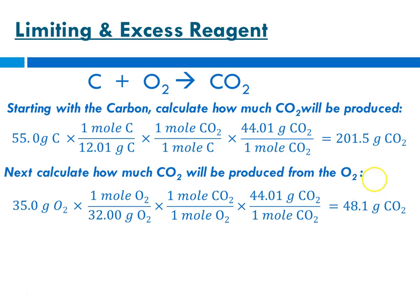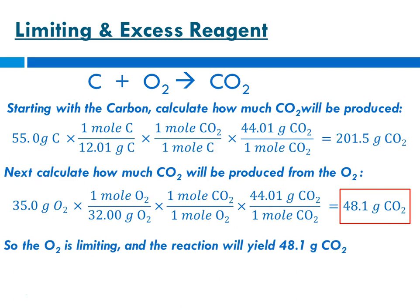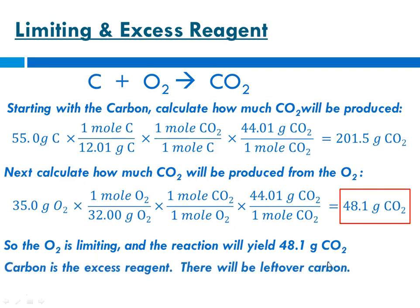From carbon we could make 201.5 grams of CO₂, but from oxygen we can only make 48.1 grams. Therefore, the most we can make is 48.1 grams, because that's the lesser of the two amounts. Oxygen is limiting, and the reaction can only yield 48.1 grams of CO₂ — that is the theoretical yield. That also means that carbon is the excess reagent, and there will be leftover carbon.